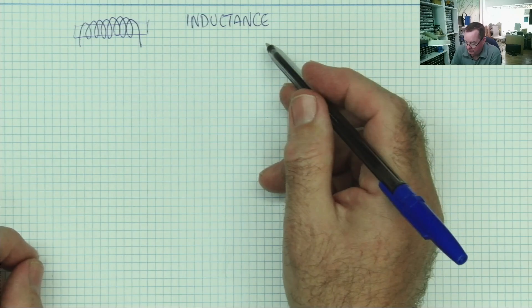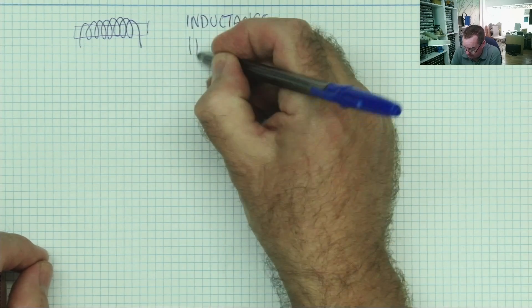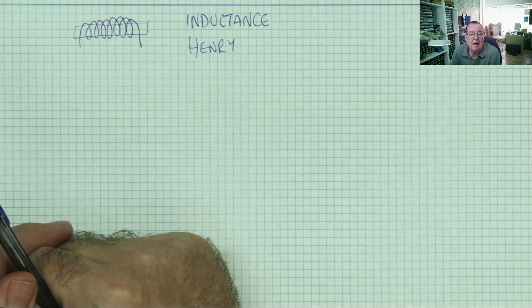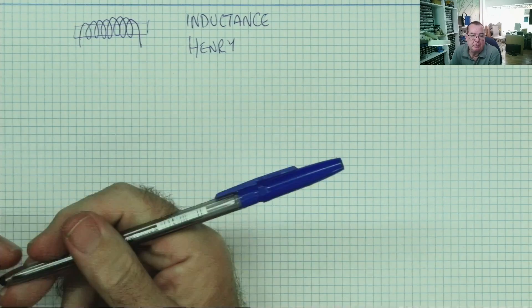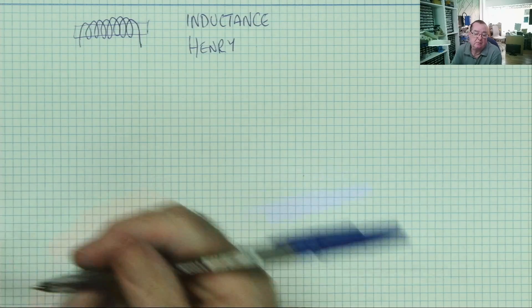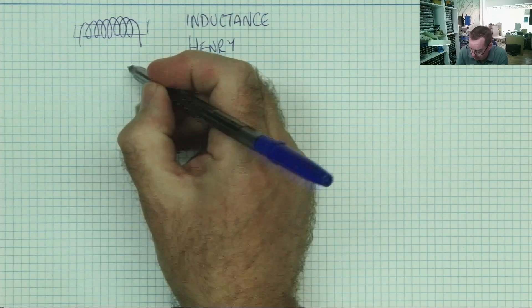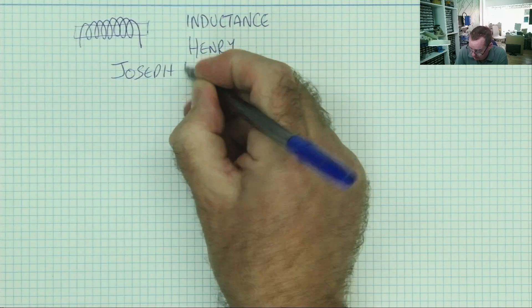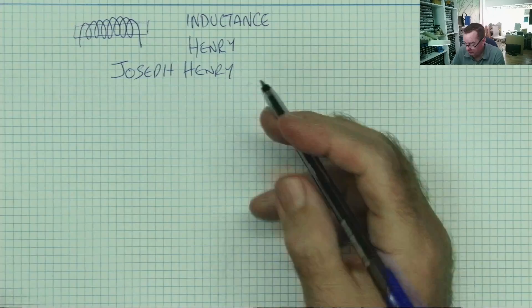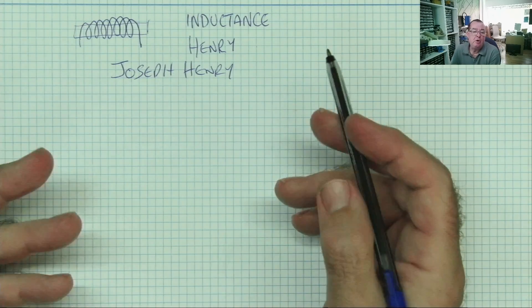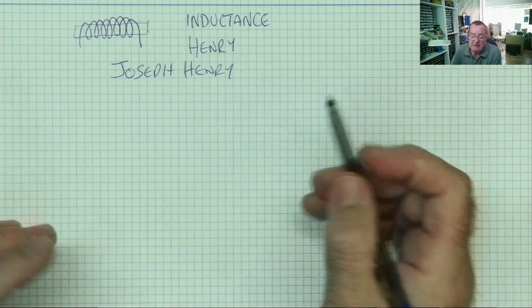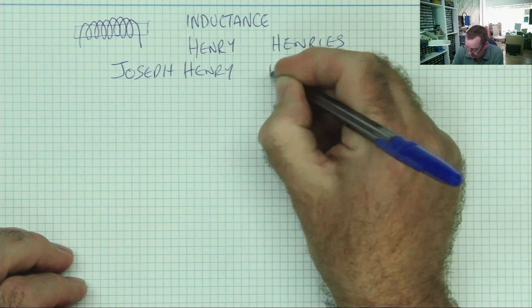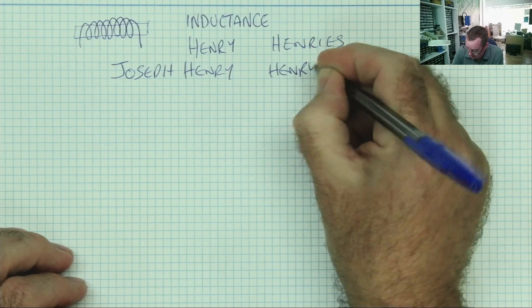So inductance is measured in Henrys. Henry again named after another famous scientist. Named, would you believe, Joseph Henry. The plural of Henry, how many Henrys isn't like this, by the way. It's actually like this. Henrys.